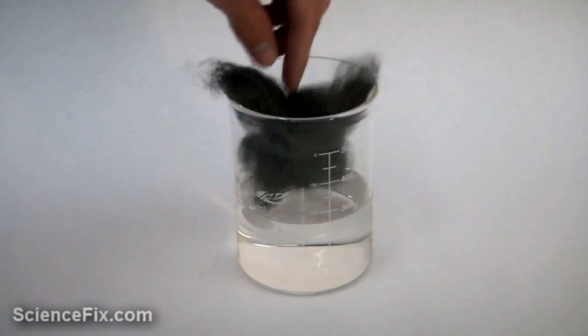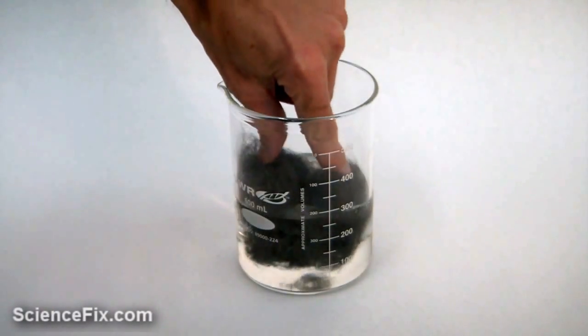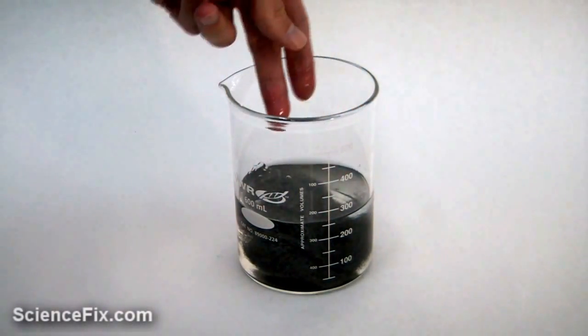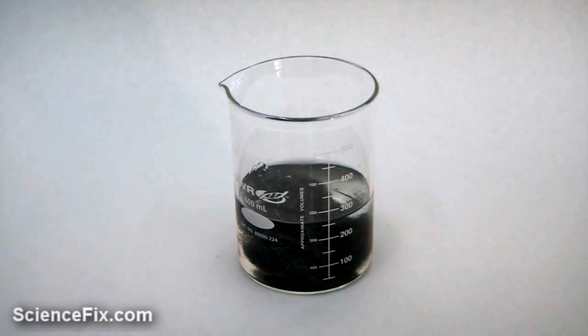The steel wool is being placed into a beaker of vinegar. The vinegar is going to strip away some of the wax that's covering the steel wool, and it's also allowing the steel wool to be exposed to oxygen in the atmosphere a lot easier.